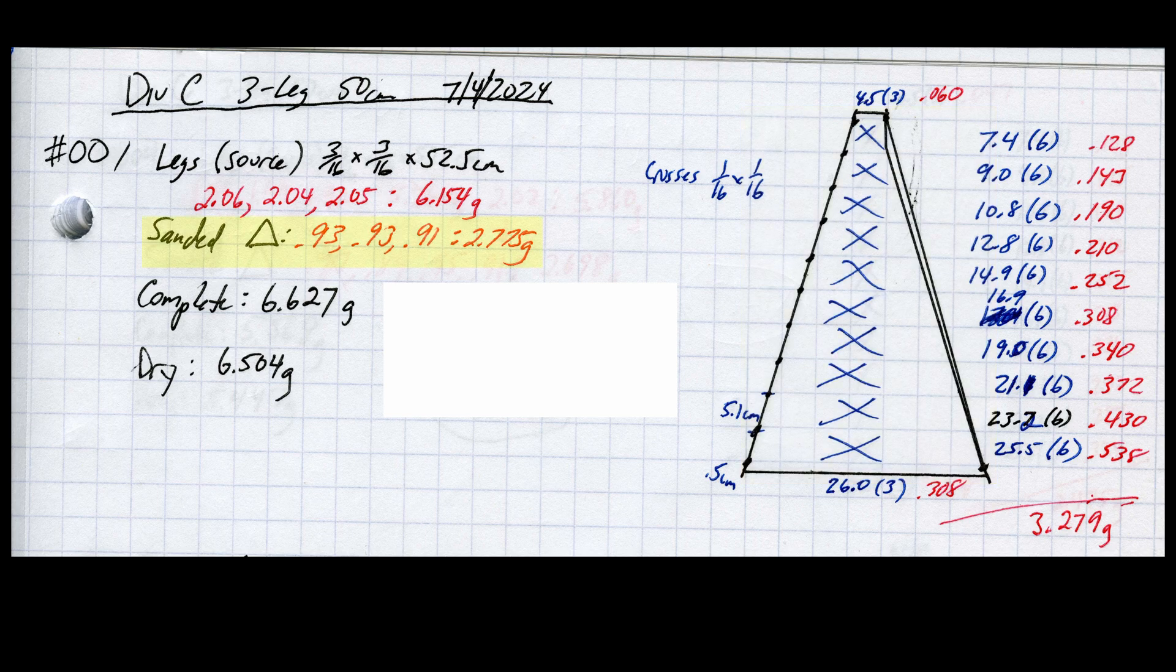The first thing I needed to decide was how heavy to make the legs. From prior experience, I knew that 0.7 gram legs work pretty well for 4 leg towers. Now we only have 3 legs supporting the same mass, so why not try something 33% more and make them around 0.93 grams. Note that I needed to use source legs that were over 2 grams to get these 0.9 gram legs. Remember that we need to sand away more than 50% of the material to get the triangular legs.